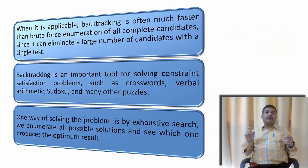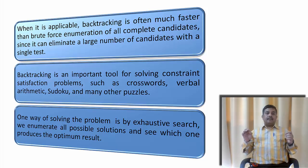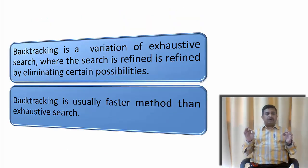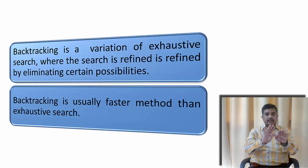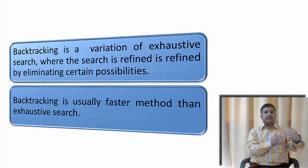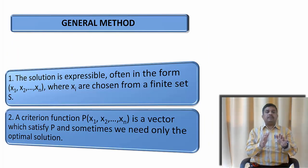Basically, backtracking is faster than your brute force methods and backtracking is an important tool for solving constant satisfaction problem, such as crossword or Sudoku. All these problems we can solve by backtracking. One way of solving the backtracking problem is by exhaustive search. Now backtracking is a variation of exhaustive search where the search is refined by eliminating certain possibilities of the solution. When the solution is not leading to the result, we eliminate that particular path or that particular part of the solution. Basically, backtracking is faster than any exhaustive search.